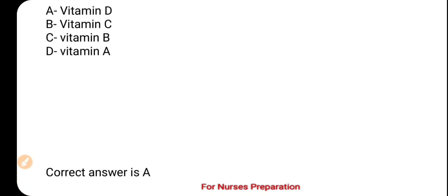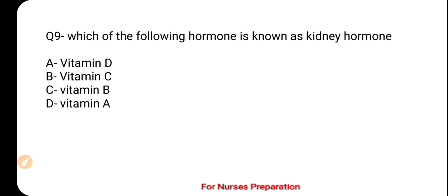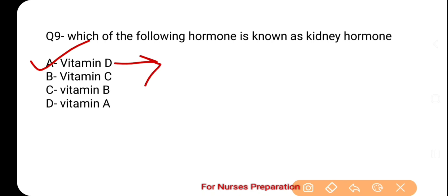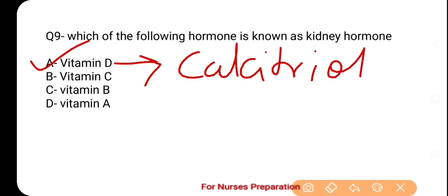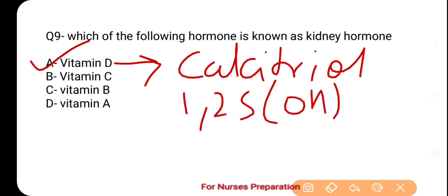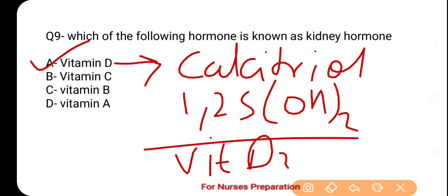And the correct option is option number A — Vitamin D. Vitamin D is also called the kidney hormone because it increases calcium absorption from the kidney. Calcitriol, also known as 1,25-(OH)2 Vitamin D3, is secreted by the kidney and is the active form of Vitamin D. It also promotes calcium absorption from food in intestinal cells. Vitamin D is also called the sunshine vitamin because its formation occurs in the skin upon exposure to sunlight.